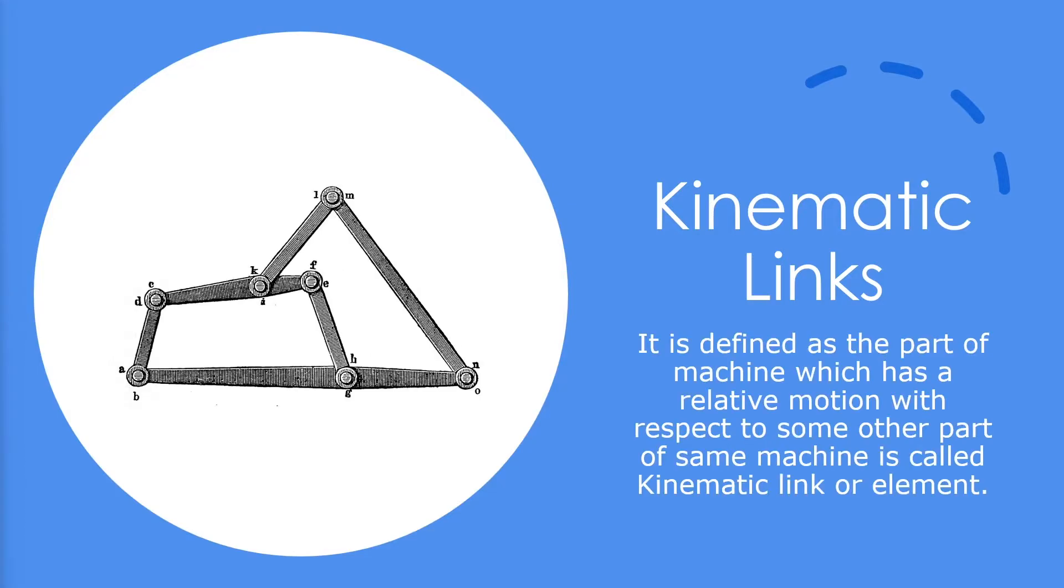The kinematic link is defined as the part of a machine which has relative motion with respect to some other part of the same machine, called kinematic link or element.